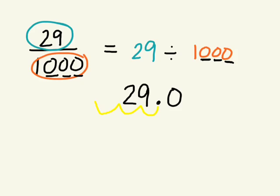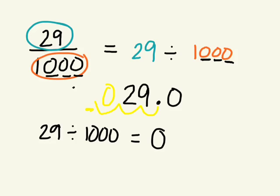So I need to put a zero in front of this, and then you put the decimal right here. So it becomes 29 divided by 1,000 is equal to 0.029.